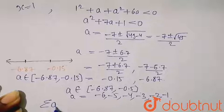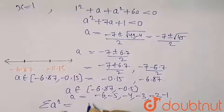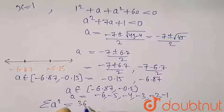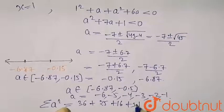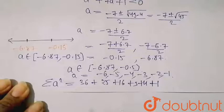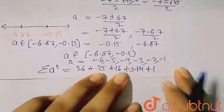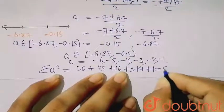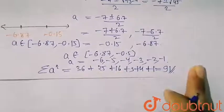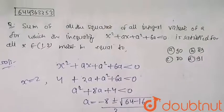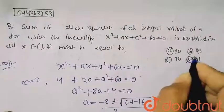The question asks for the sum of squares of the integral values. So the sum of squares = 36 + 25 + 16 + 9 + 4 + 1 = 91, which is the answer for this question. From the options, you can see that option D is correct, which is 91.